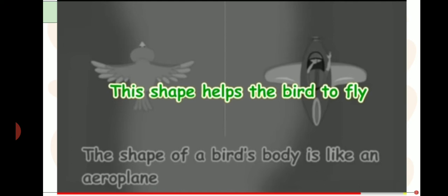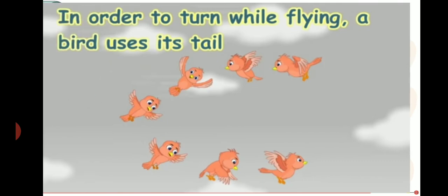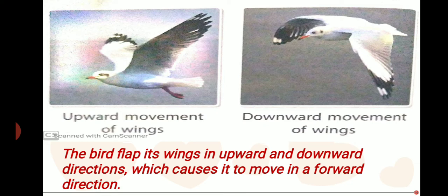Next is the tail, which is very important in flying. With the help of its tail, a bird can change direction — in order to turn while flying, a bird uses its tail. There are also two kinds of wing movements that help a bird fly: upward movement and downward movement. The bird flaps its wings upward and downward, which causes it to move in a forward direction.